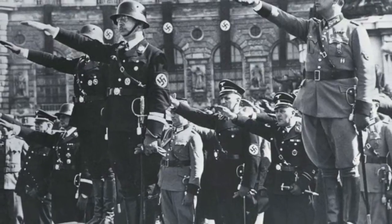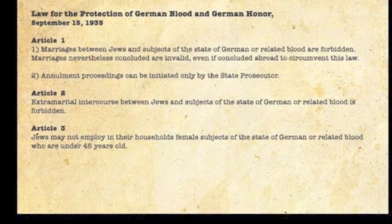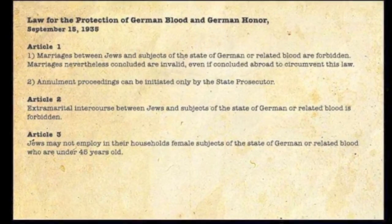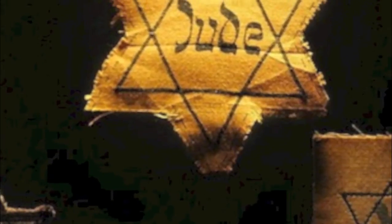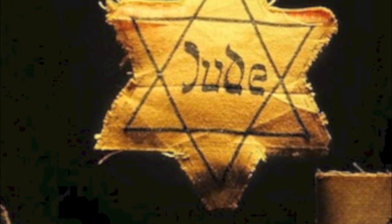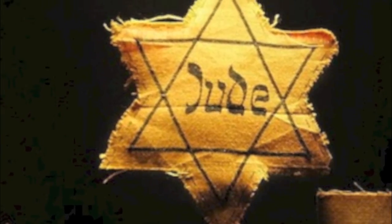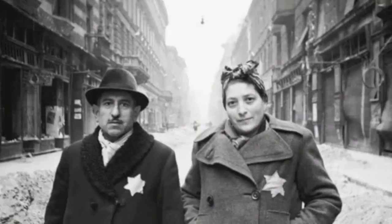After Hitler was elected, he started taking rights away from Jews, including German citizenship and the rights to marry non-Jews. Jews were forced to wear yellow stars as identification. If they refused, they would be arrested.